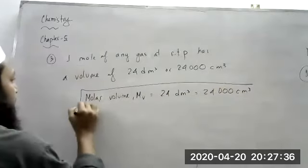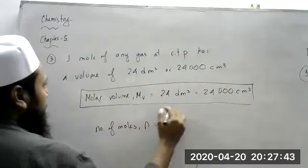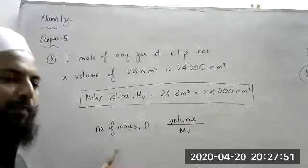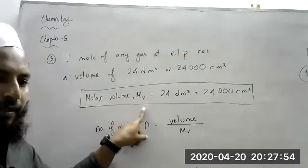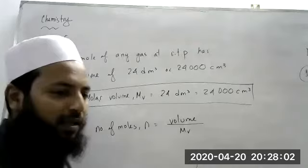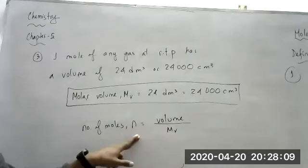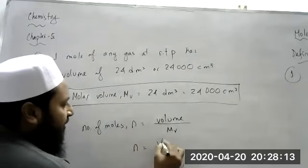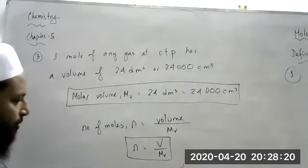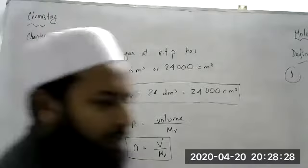So the number of moles n equals volume divided by molar volume. For example, two moles of carbon dioxide would be 24 × 2 = 48 dm³. If you multiply molar volume by the number of moles, you always find the volume. So n equals V divided by MV — that is the third formula. Molar volume is 24 dm³ or 24,000 cm³.